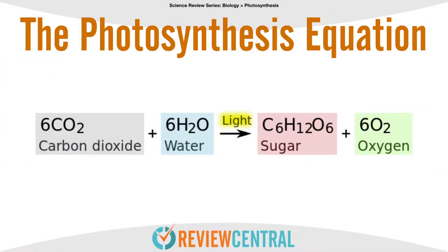The whole process of photosynthesis can actually be expressed in an equation. The equation basically shows the inputs — carbon dioxide and water — and the resulting outputs — sugar and oxygen — after the application of light.